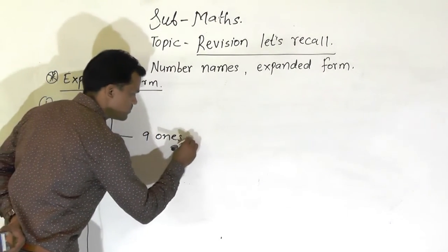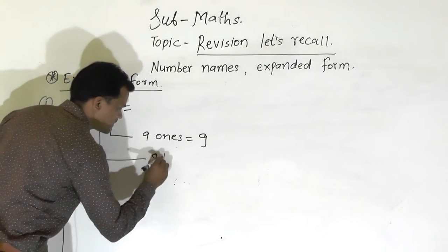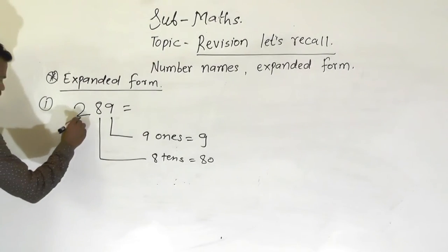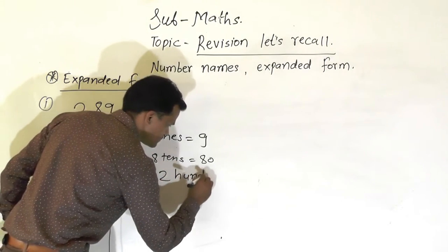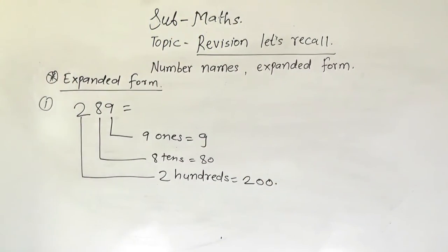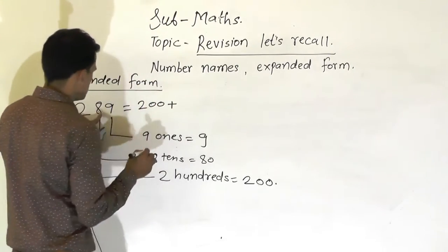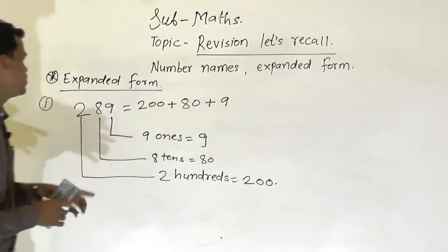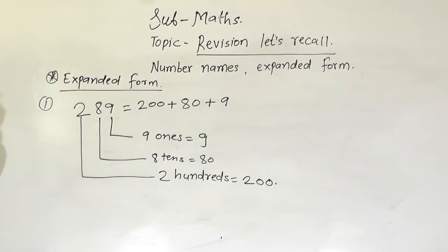In this number, 9 comes at the ones place, so 9 ones means 9. 8 comes at the tens place, so 8 tens means 80. And 2 comes at the hundreds place, so 2 hundreds is equal to 200. Now we will write the expanded form of this number: 200 plus 80 plus 9. So 200 plus 80 plus 9 is the expanded form of 289.